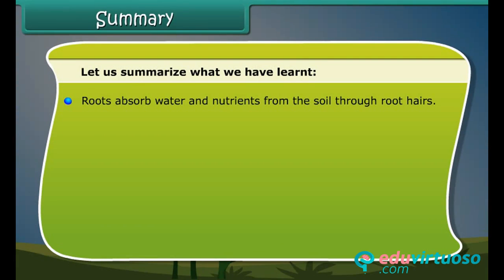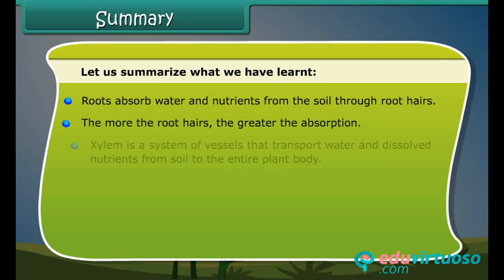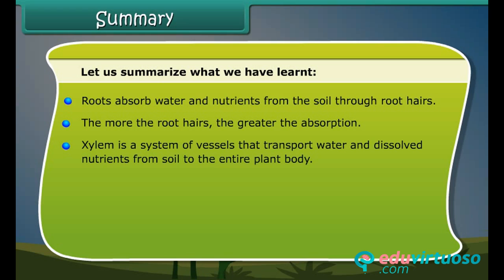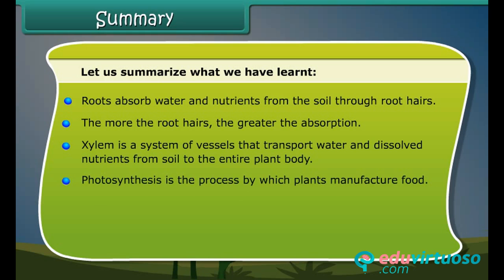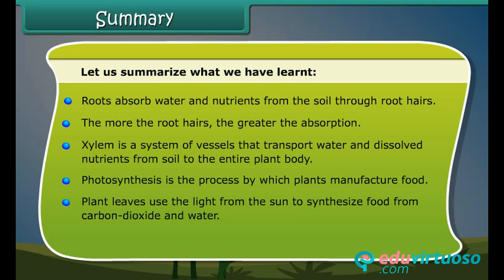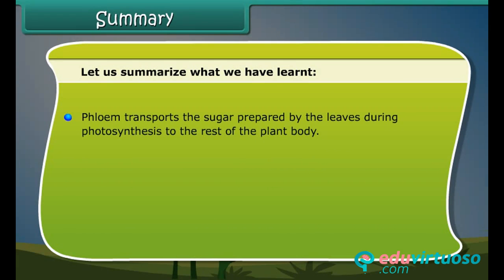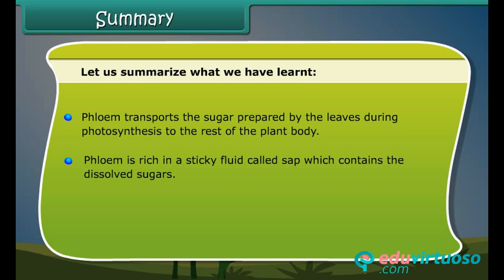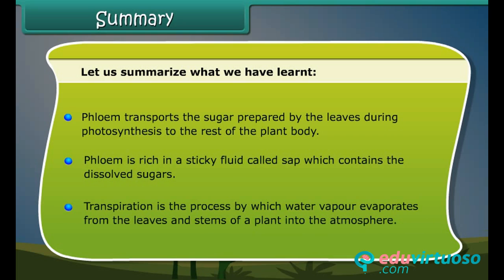Roots absorb water and nutrients from the soil through root hairs. The more the root hairs, the greater the absorption. Xylem is a system of vessels that transports water and dissolved nutrients from the soil to the entire plant body. Photosynthesis is the process by which plants manufacture food. Plant leaves use the light from the sun to synthesize food from carbon dioxide and water. Sugar and oxygen are the end products of photosynthesis. Phloem transports the sugar prepared by the leaves during photosynthesis to the rest of the plant body. Phloem is rich in a sticky fluid called sap which contains the dissolved sugars. Transpiration is the process by which water vapor evaporates from the leaves and stems of a plant into the atmosphere.